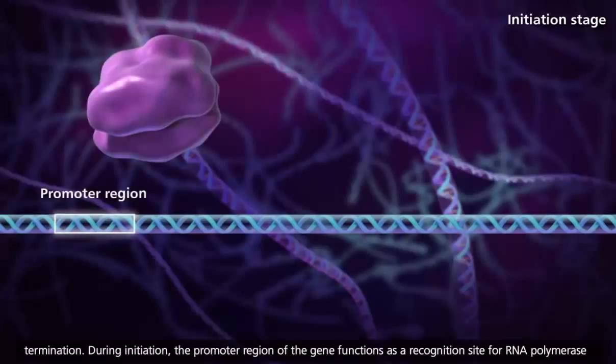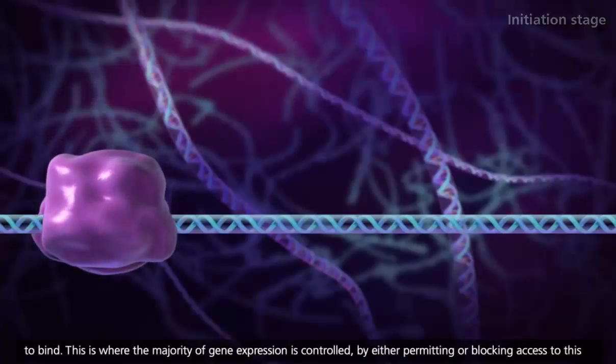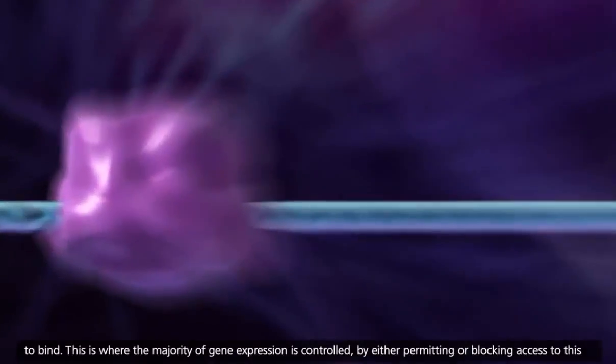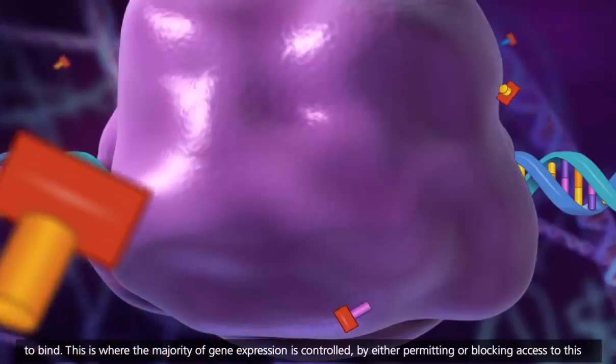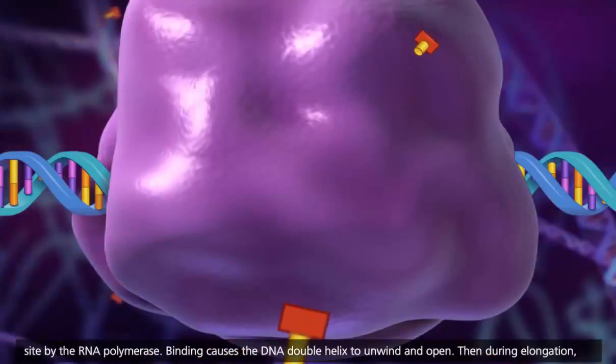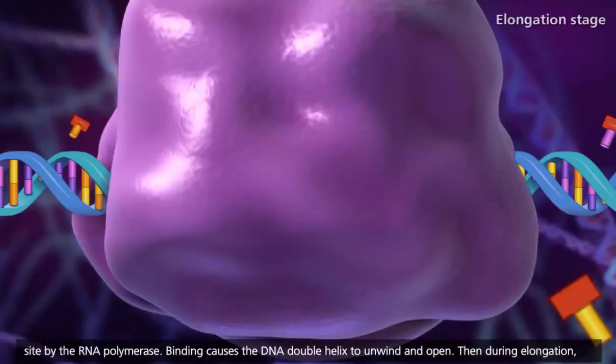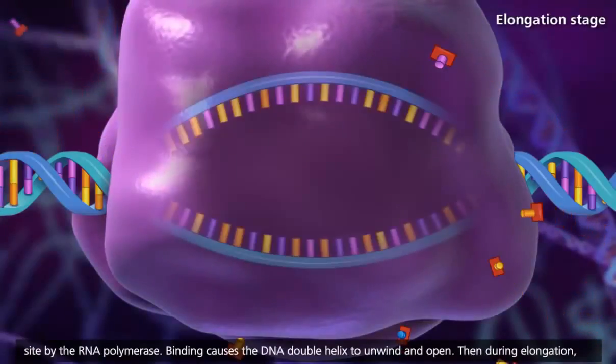During initiation, the promoter region of the gene functions as a recognition site for RNA polymerase to bind. This is where the majority of gene expression is controlled, by either permitting or blocking access to this site by the RNA polymerase. Binding causes the DNA double helix to unwind and open.